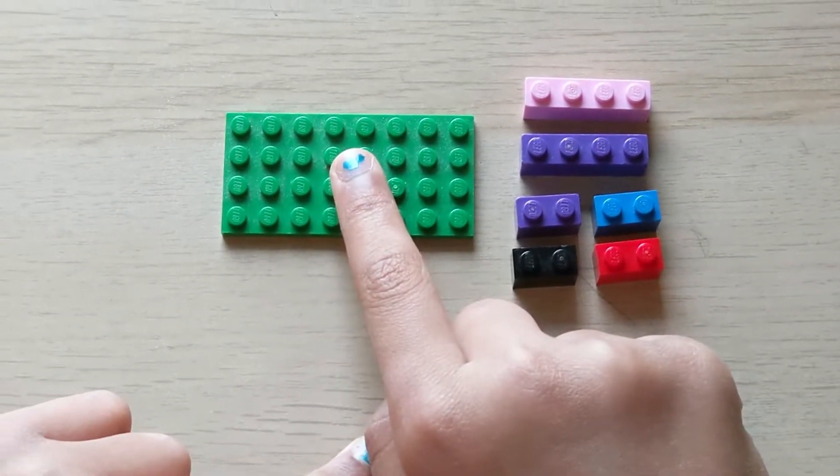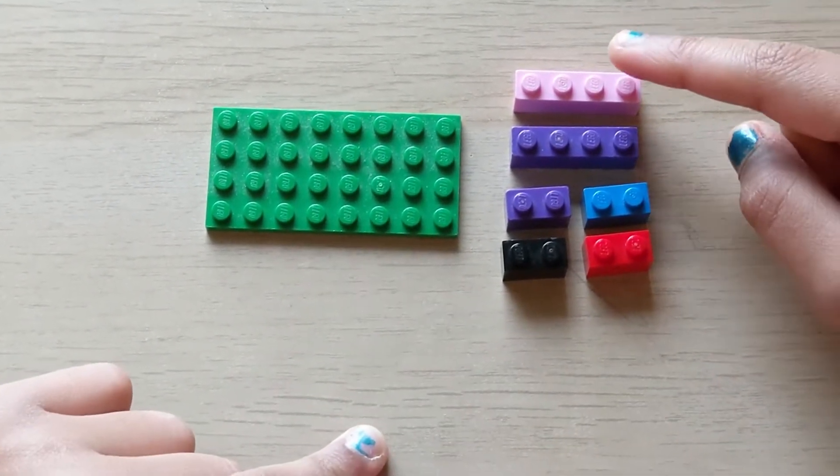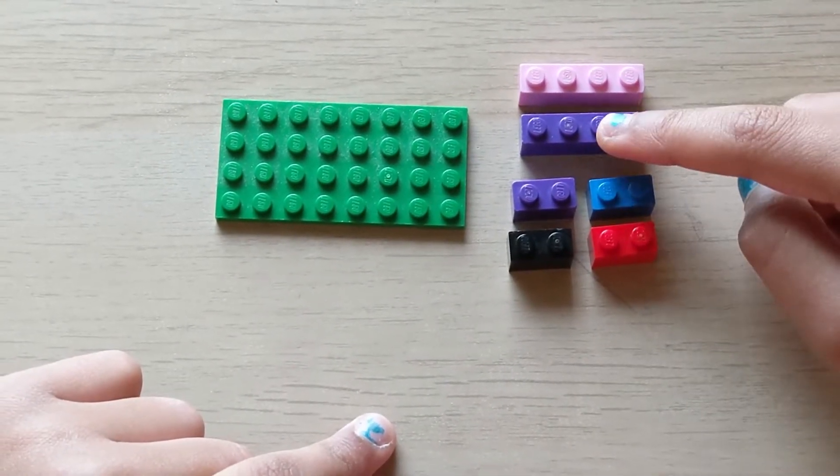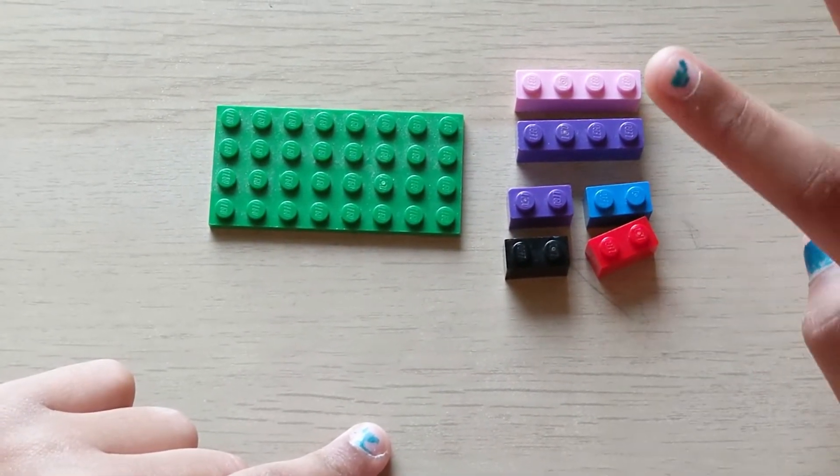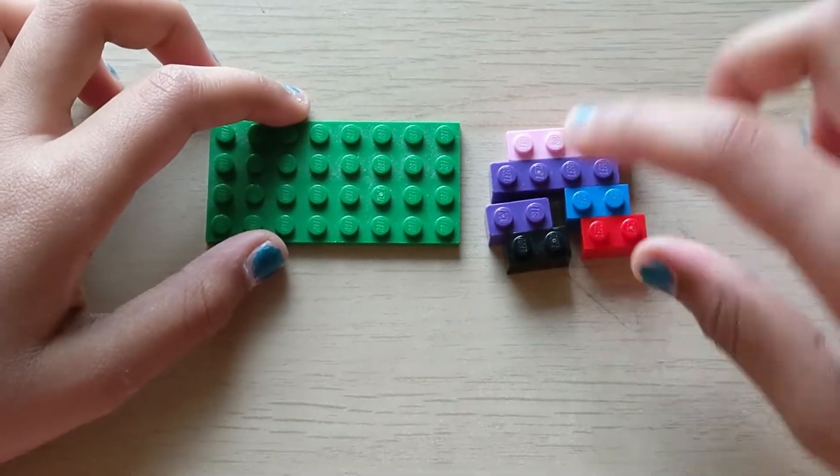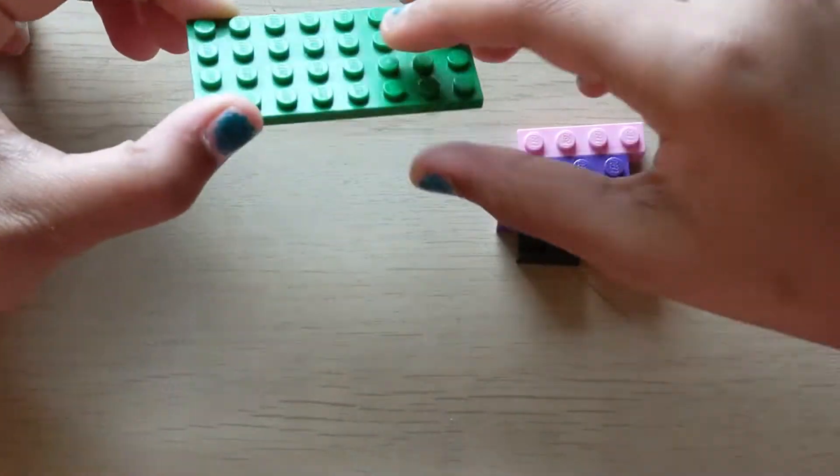You're going to need an eight by four piece and two four dot pieces. Well, you could have four four dot pieces, but I don't have that many so I'm using these. So you're gonna flip over your little eight by four piece.